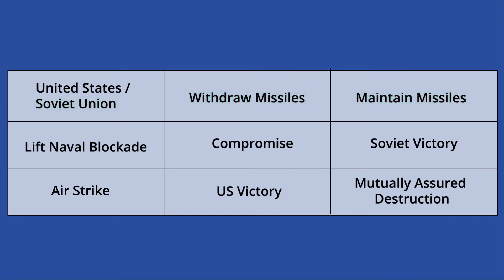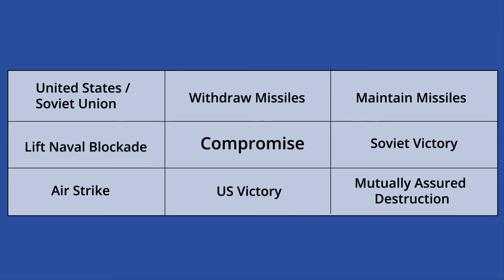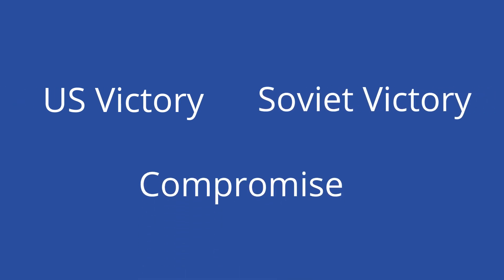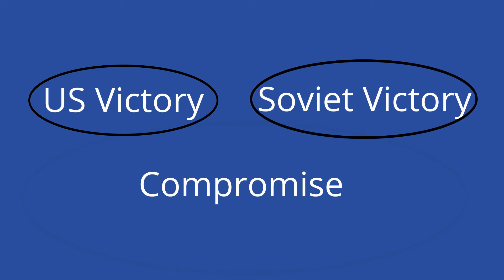These moves could lead to one of four main outcomes: U.S. victory, Soviet victory, compromise, or mutually assured destruction in the form of a nuclear war. Neither party wants to lose the game — they want to win. Following the logic of the prisoner's dilemma, that meant that even though it's objectively the worst option, both parties came dangerously close to starting a nuclear war.